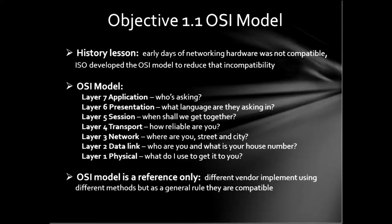In the early days of networking there was no OSI model. If you had an IBM machine, you could only network with another IBM machine. If you had a DEC, you were stuck only being able to talk to a DEC because nobody was concerned about compatibility. Then along came the ISO, and they like to make things standard, so they developed the OSI model.